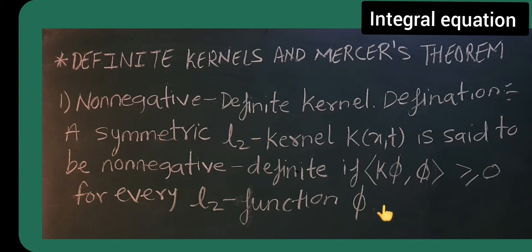This definition is for non-negative. What is non-negative? It will be something like 0, 1, 2 — they are all non-negative. So the inner product should be greater than or equal to 0 for k·φ,φ. Then you can say it is a non-negative definite kernel.